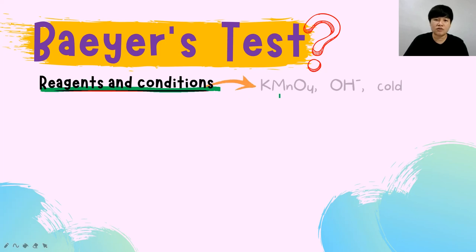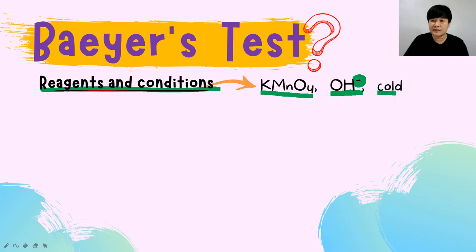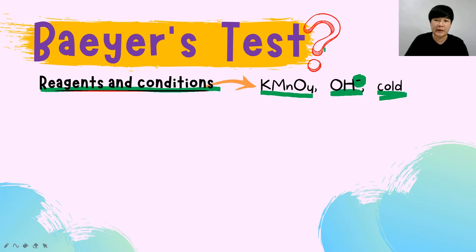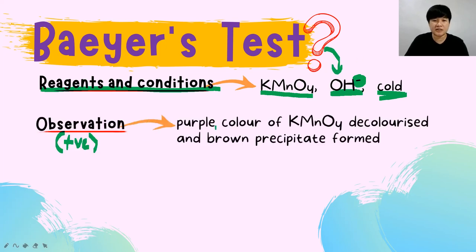The reagent and condition for the Bayer test is KMnO₄ with OH⁻ (alkaline) in cold conditions — so you must use alkaline KMnO₄ in a cold condition. The positive observation is that the purple color of KMnO₄ will decolorize and a brown precipitate will form.